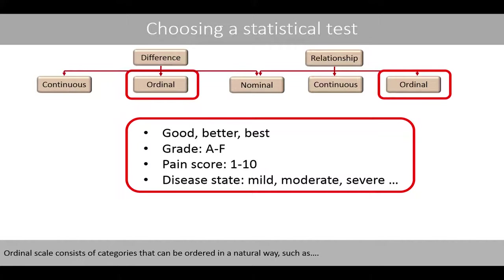Ordinal scale consists of categories that can be ordered in a natural way, such as good, bad, or best; the grades A to F; pain score between 1 and 10; and the disease states mild, moderate, and severe.